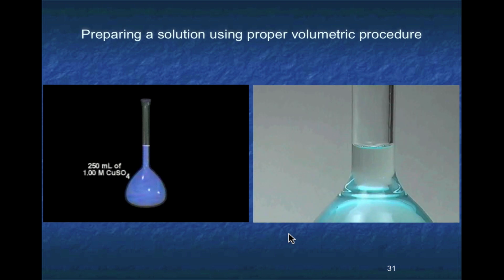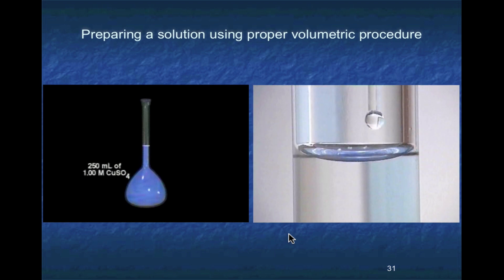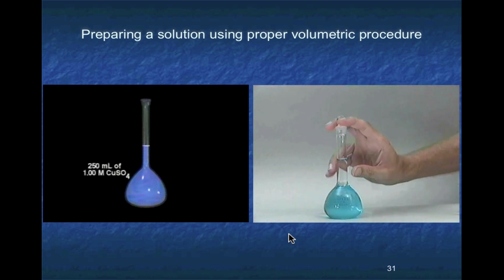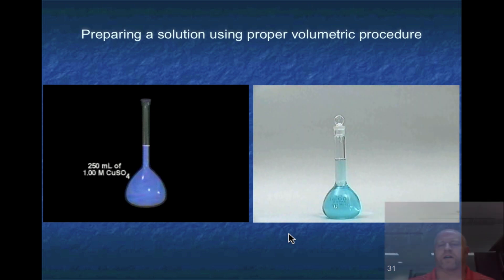When the solution level is near the mark, check that the temperature of the solution is near room temperature. If it is not, wait for it to reach room temperature. Use an eyedropper to bring the meniscus to the mark. Insert a stopper and mix the solution by inverting it. Do not use your hand.